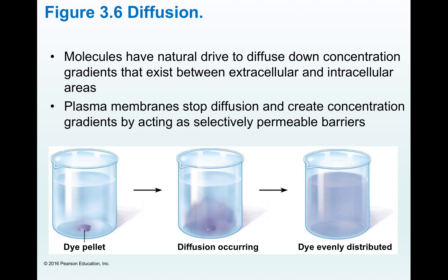Here is a scenario describing the process of diffusion using diagrams. We have a dye pellet at the bottom of a beaker with high concentration at the bottom and almost no concentration in the surrounding environment. As time passes, the molecules of dye start to distribute throughout the solution equally until equilibrium is reached — movement from high concentration toward lower concentration. Keep in mind that the plasma membrane allows only certain molecules to pass through because it is selectively permeable.